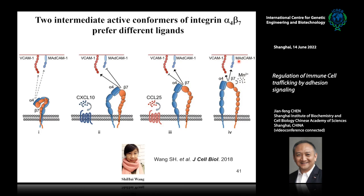In brief summary: the resting integrin has a relatively low binding affinity to both VCAM-1 and MAdCAM-1. When integrin is activated by CXCL10, it adopts an intermediate extended conformation with increased affinity to VCAM-1 but decreased affinity to MAdCAM-1 — even lower than the resting state. When integrin is activated by CCL25, it has a more extended conformation with the opposite pattern: increased affinity to MAdCAM-1 and suppressed affinity to VCAM-1. When integrin is activated by manganese and achieves full extension, this conformer can bind to both VCAM-1 and MAdCAM-1 in high affinity. This study is the first to prove that integrin can have these different active conformations, each with distinct physiological functions.